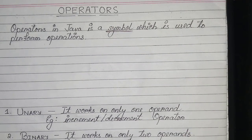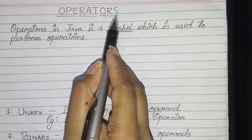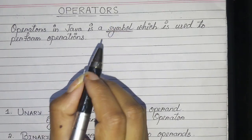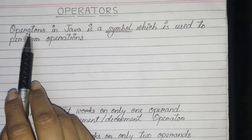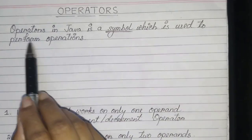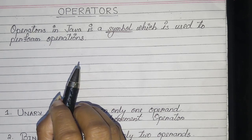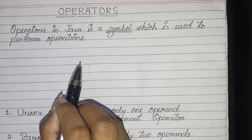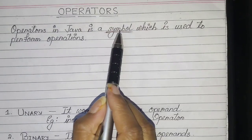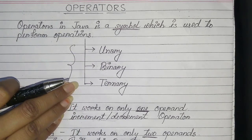Hello students, today I am going to teach you operators in Java. An operator is a symbol which is used to perform operations. Operators help us to perform a task using some symbols. In Java, operators are classified into three basic categories which are given here.